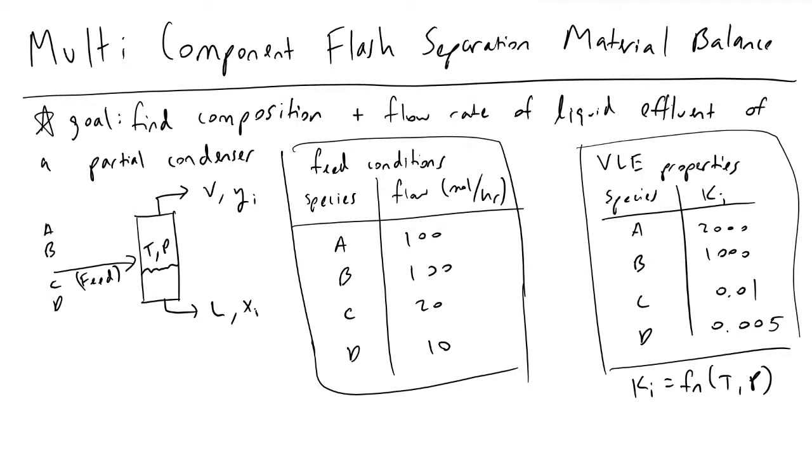Determining a material balance on a partial condenser or flash separation unit is often done in practice using computer programs such as Aspen with an iterative method. As a chemical engineer, you should understand how Aspen determines the effluent conditions.